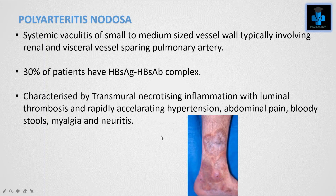Next is polyarteritis nodosa, which comes under medium sized vessels. These are systemic vasculitis of small to medium sized vessel walls, typically involving renal and visceral vessels while sparing the pulmonary artery. 30% of patients have hepatitis B surface antigen-antibody complex. They are characterized by transmural necrotizing inflammation with luminal thrombosis, rapidly accelerating hypertension, abdominal pain, bloody stools, myalgia, and neuritis.